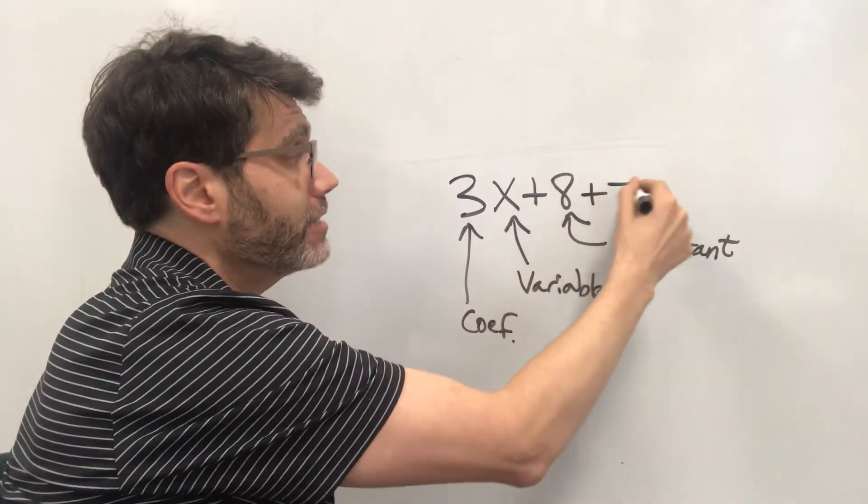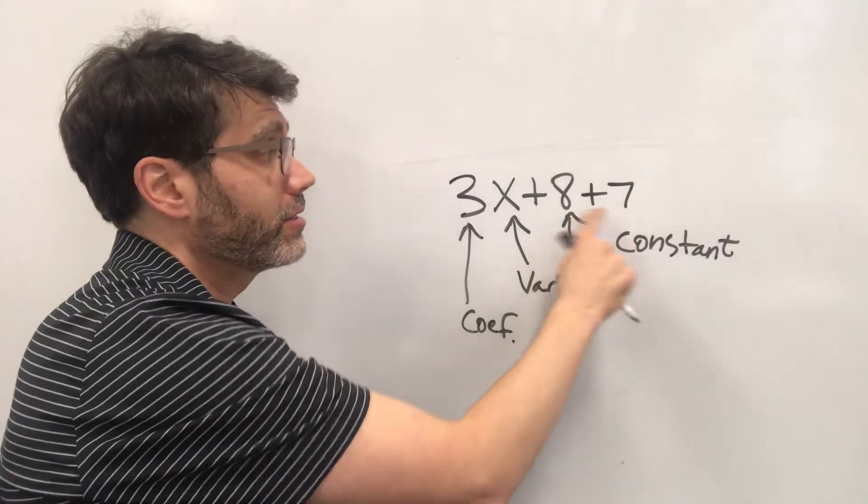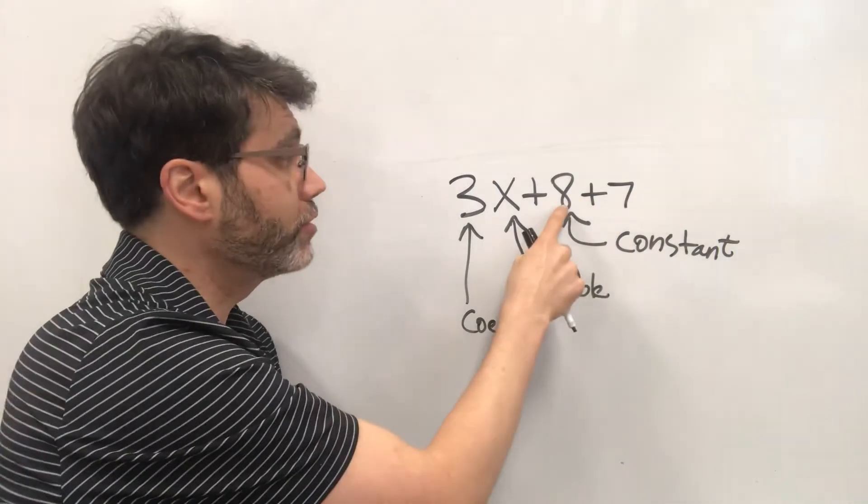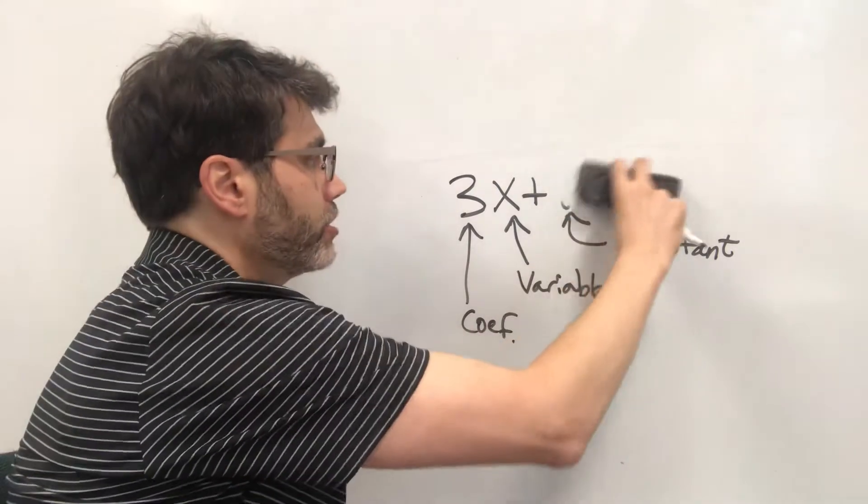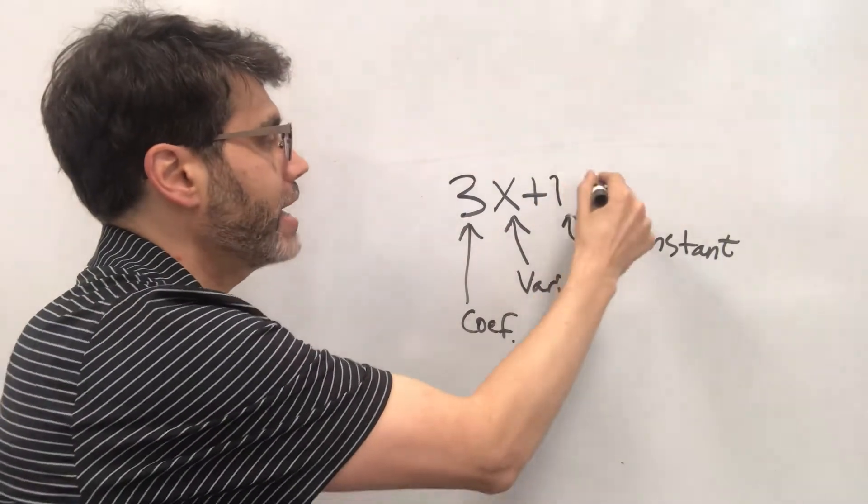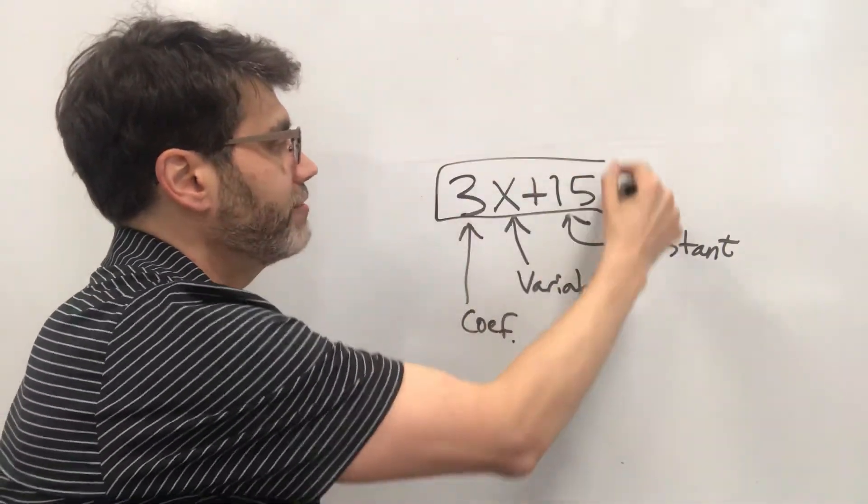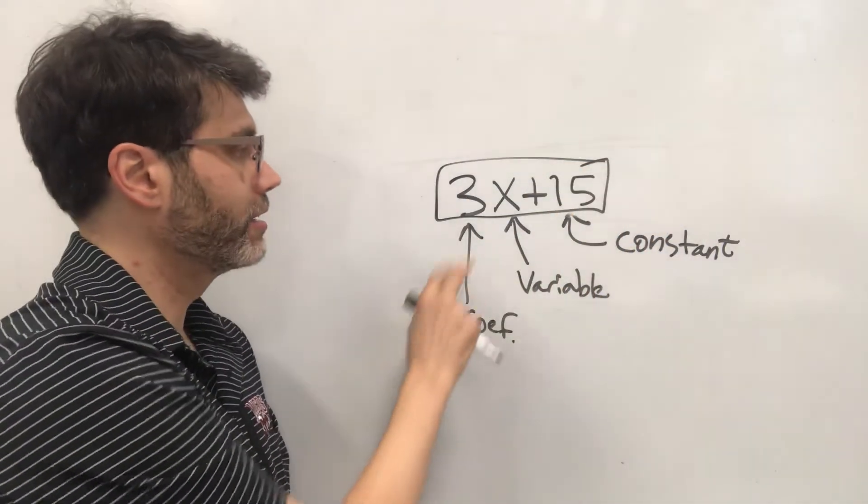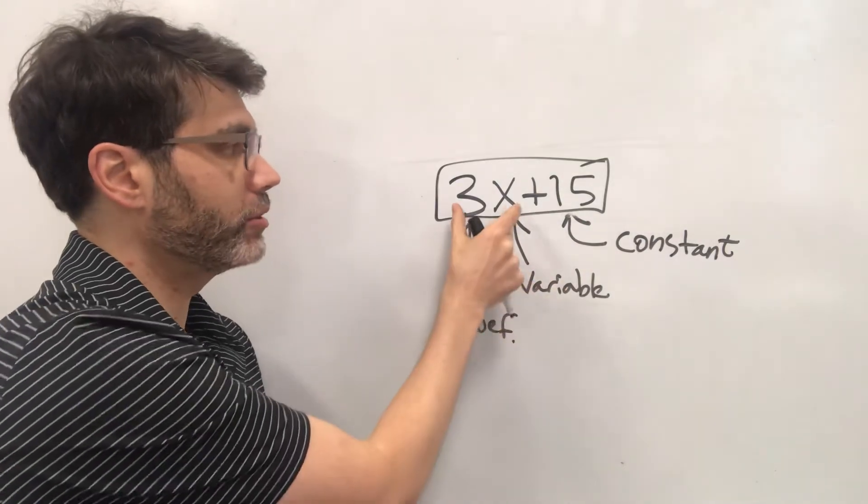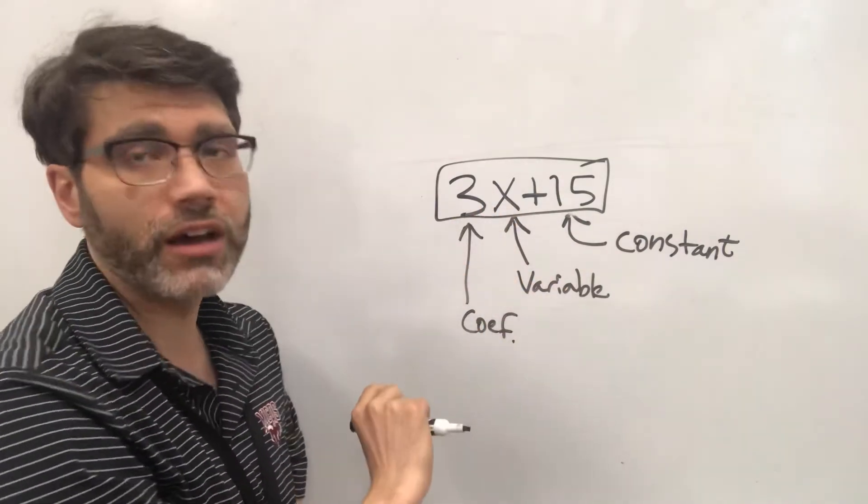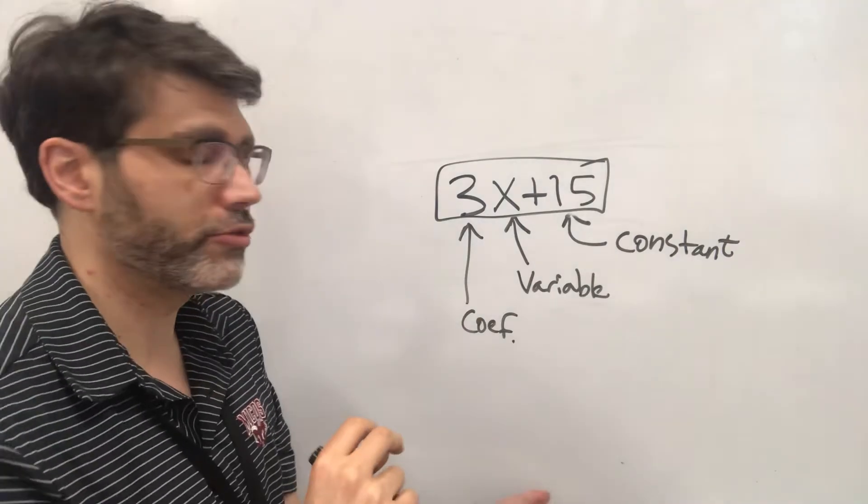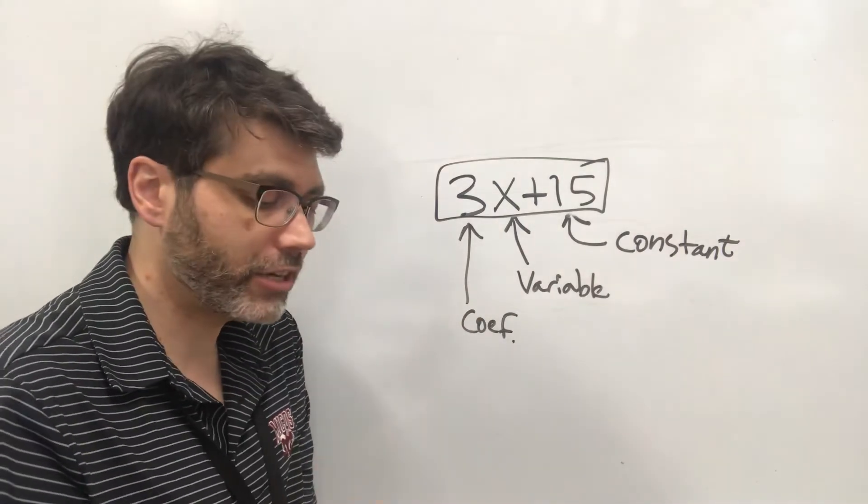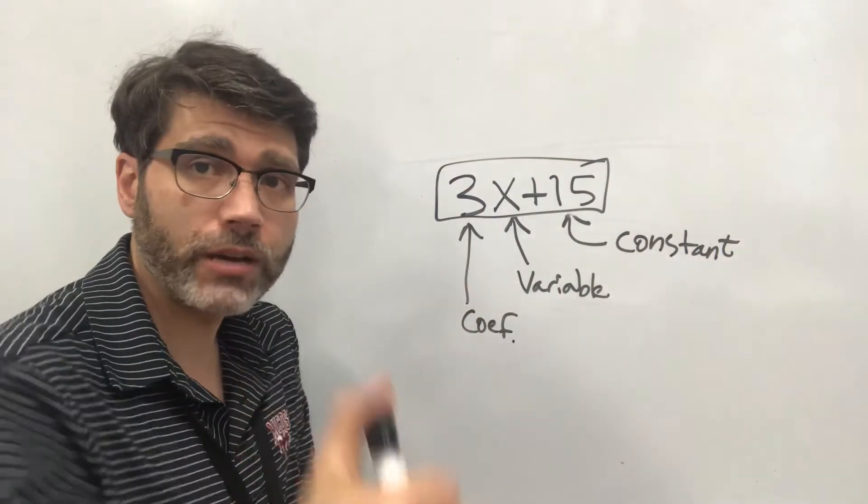And you can add constants together. Constants are like terms. So if it was 8 plus 7 you can make that 15. But again you cannot combine 15 which is a constant to the coefficient variable couple. Because of what you would need to go through. So that's an introduction. And we'll try a couple questions out.